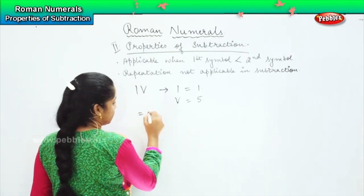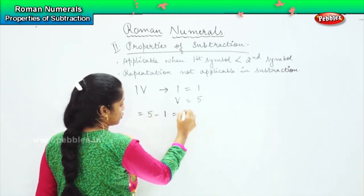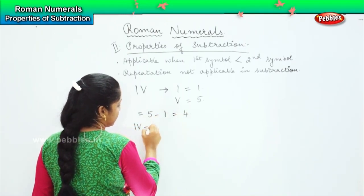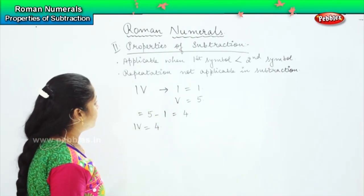So here it will become 5 minus 1 equals 4, so IV represents 4.